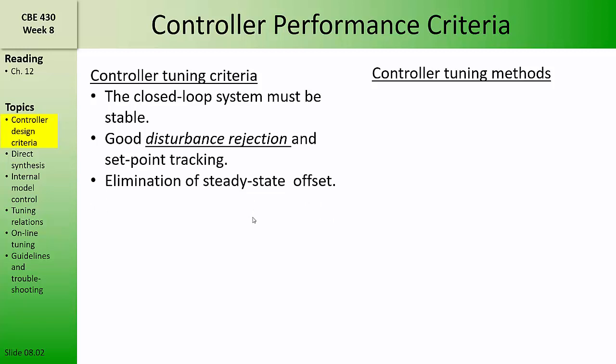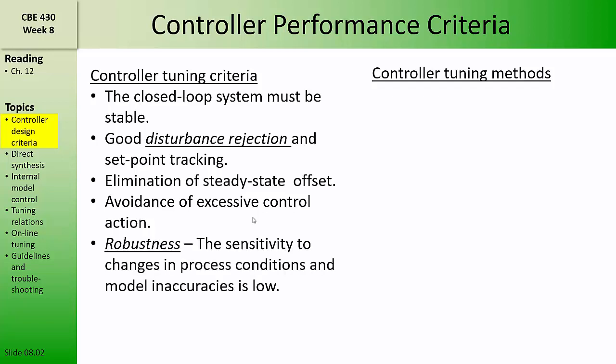We may want to tune a feedback controller so as to eliminate steady state offset. Alternatively, we might choose to avoid excessive controller action, meaning that when there's a disturbance or setpoint input, we don't want the controller to keep changing the manipulated variable for a long time or cause oscillations in the manipulated variable. Often we want to tune controllers for robustness. Robustness refers to how sensitive the feedback control loop is to changes in process conditions and model inaccuracies. A robust feedback control loop has low sensitivity to such changes — that is, it can tolerate variations in the operating conditions.